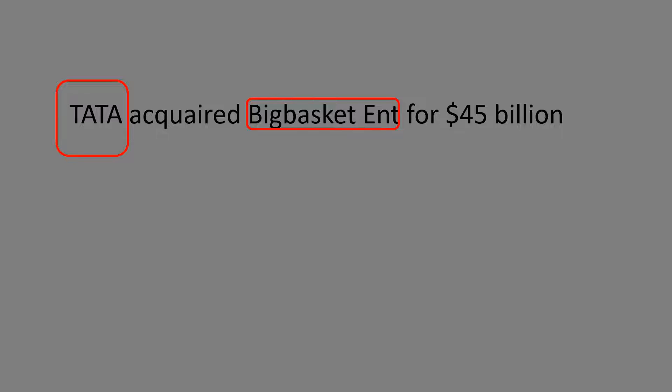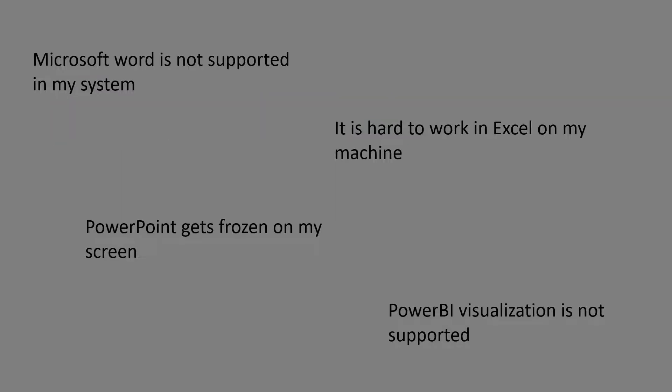Where can we use this? Consider you're working in customer support at Microsoft Corporation and you're getting all kinds of complaints. You want to build a system where the machine automatically understands emails or chats and automatically assigns those complaints to a specific group or team — for example, a team supporting Microsoft Excel, Microsoft Word, PowerPoint, Power BI, etc.